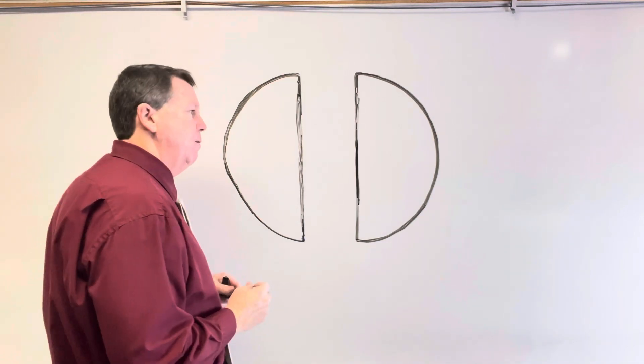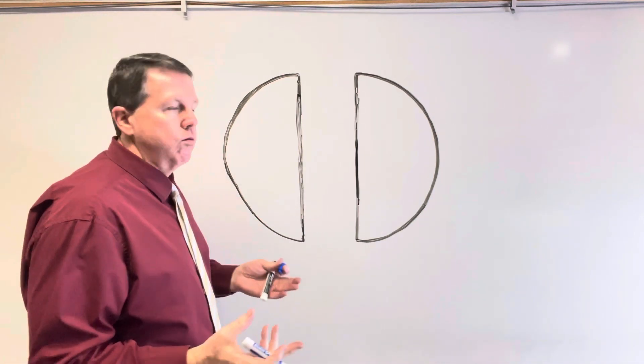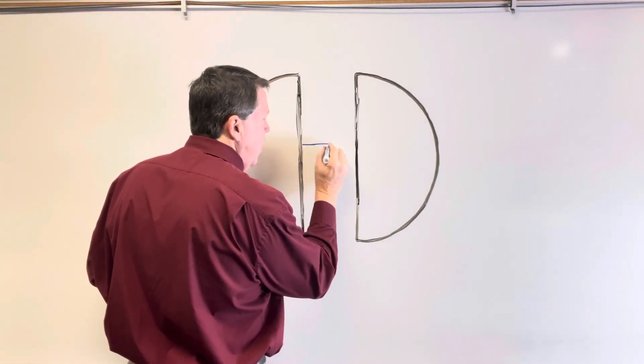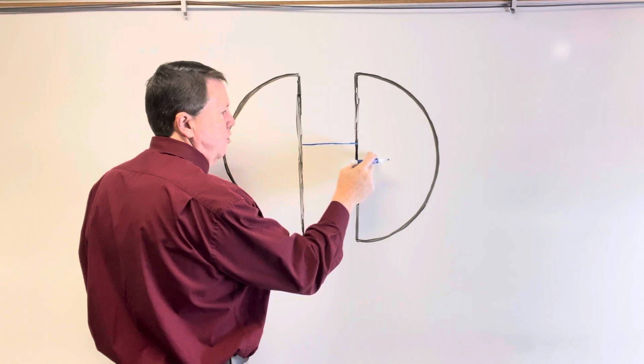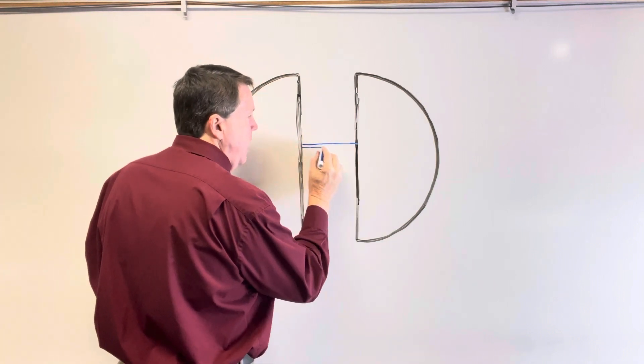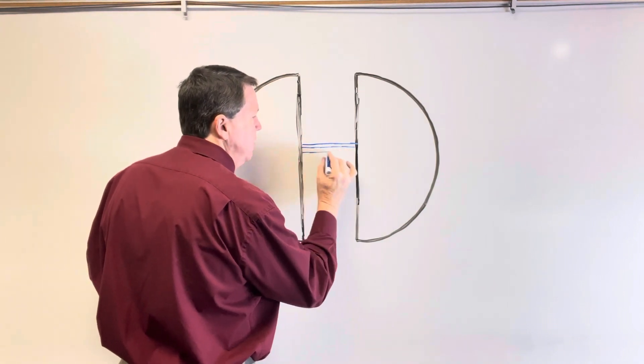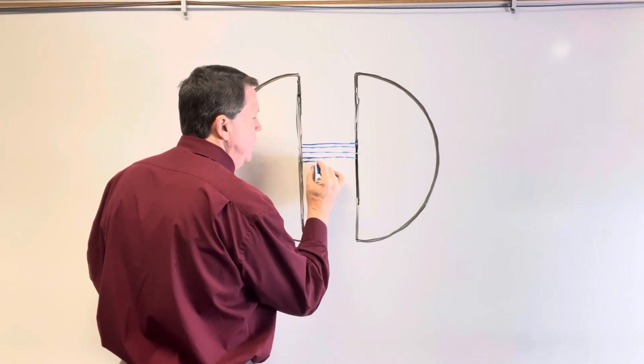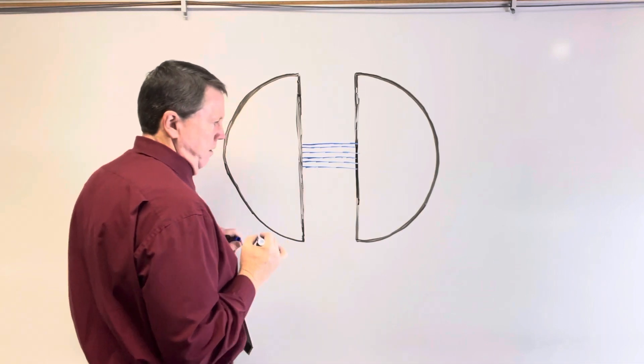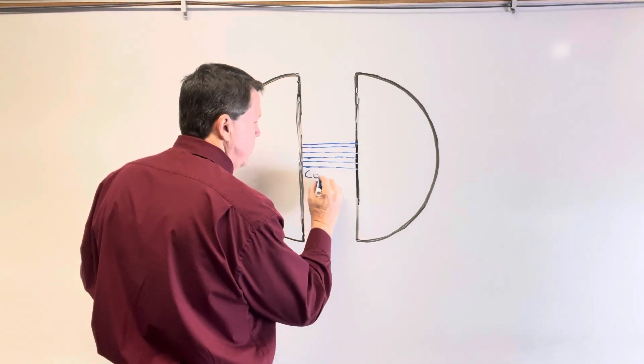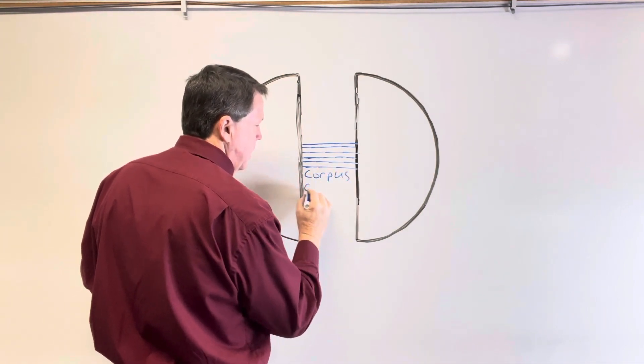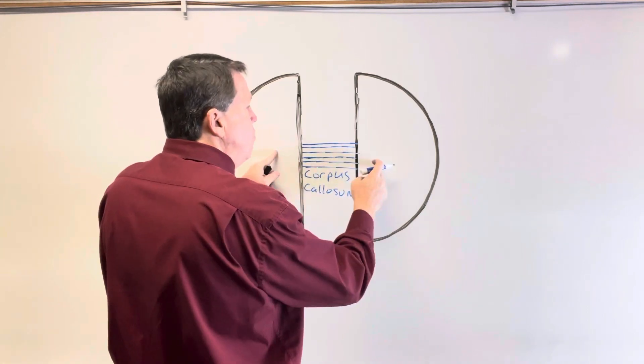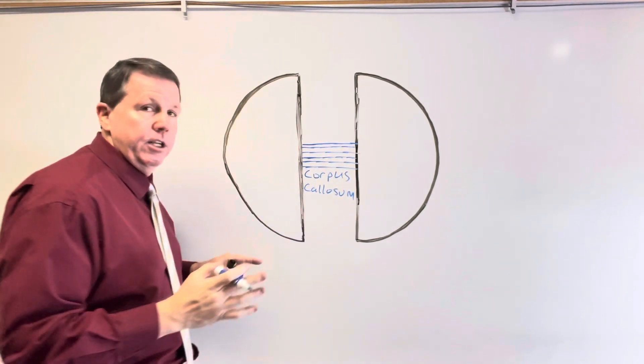Around the eighth week of development, your brain starts to grow axons. And these axons will help the two hemispheres communicate with each other. This actually takes up until your teenage years to finish developing. But you'll get about 200 million of these axons that go across here. And we call this the corpus callosum. Now, they help each side communicate with each other.